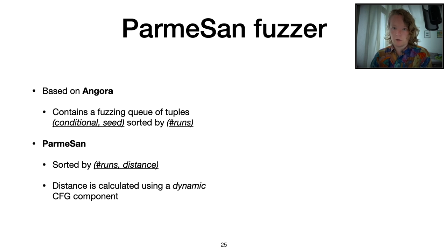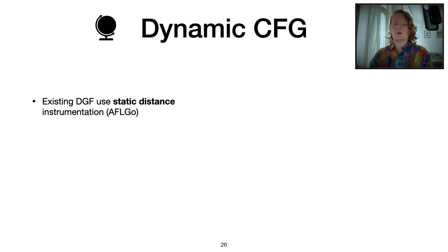How do we calculate this distance? Well, using our dynamic control flow graph component. First of all, existing direct gray box fuzzers also have a notion of distance, right?